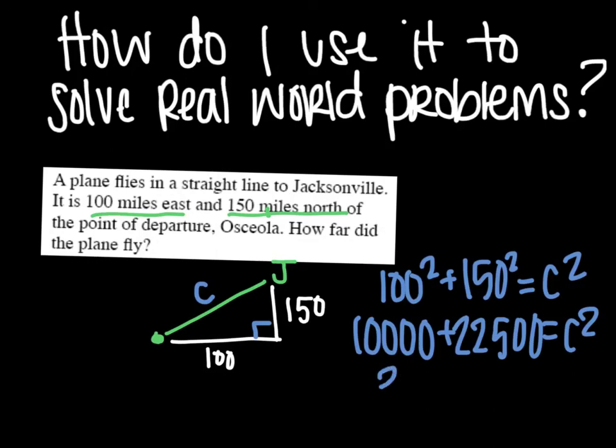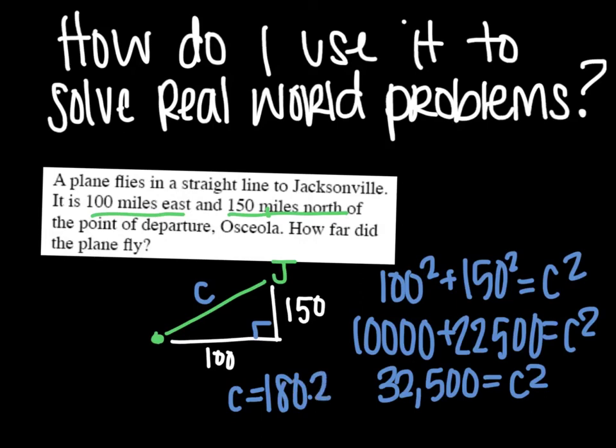And you get 32,500 equals C squared. Square root that. And C will be about 180.28 and then miles. So how far did that plane fly? About 180 miles.